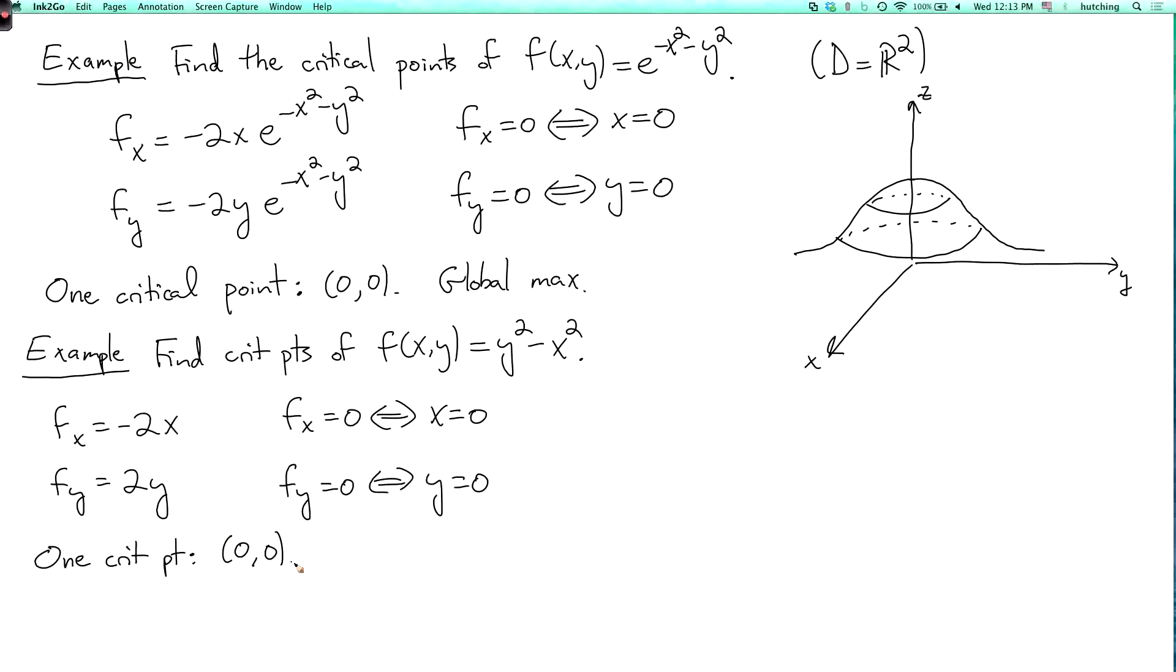Now is this a local minimum, a local maximum, or neither? Well, if we draw the graph, this is, once again, the infamous hyperbolic paraboloid. So it goes up in the y direction and down in the x direction.